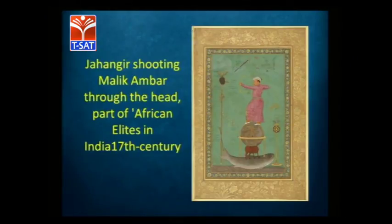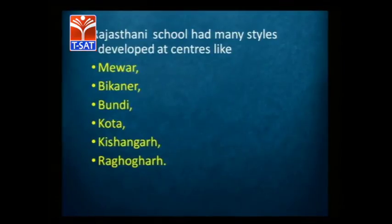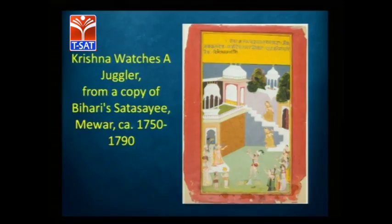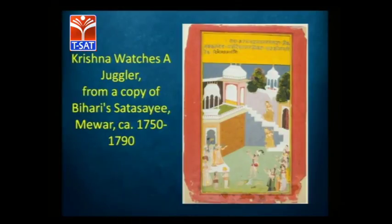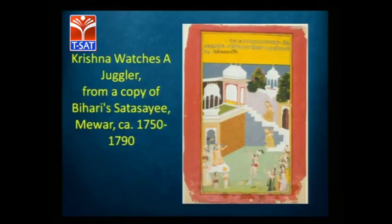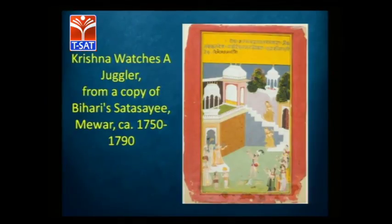Moving to the Rajasthani school, you have different schools within Rajasthan: Mewar, Bikaner, Bundi, Kota, Kishangarh, Rajgarh, and various other smaller places. Most Rajasthani as well as Pahari paintings are based on mythological stories — images of gods and goddesses. Krishna plays a very important role, along with stories from the Mahabharata and Ramayana — the Krishnaleela narratives and the leelas of Krishna, largely based on texts written at that time.